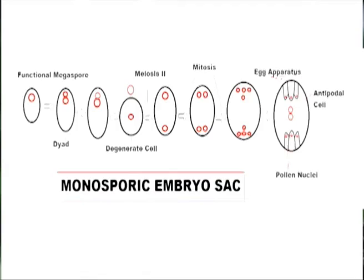On the basis of the number of meiotic products that contribute to the mature female gametophyte and where cell plate formation occurs, angiosperms exhibit three main patterns of megasporogenesis: monosporic, bisporic, and tetrasporic. In the monosporic pattern, both meiotic divisions are accompanied by cell plate formation, resulting in four megaspores each containing one nucleus. Three megaspores at the micropylar end undergo cell death, and only one megaspore remains functional.